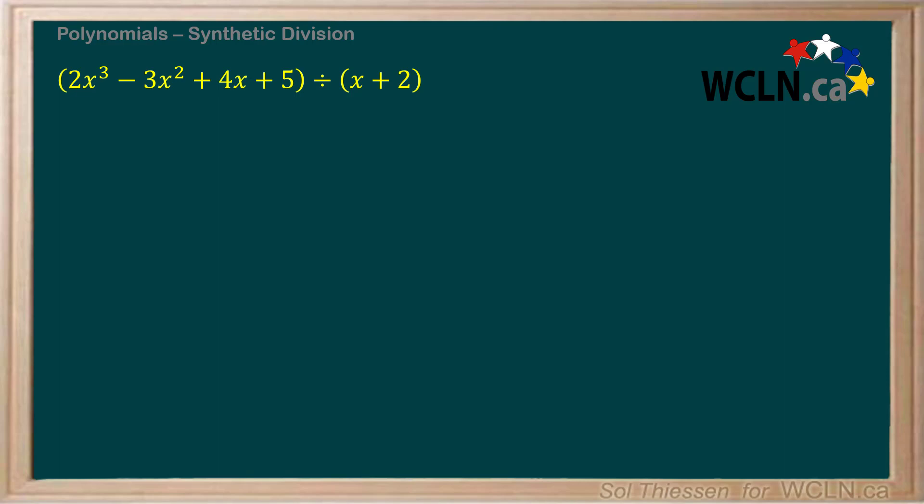Once we've taken the divisor and converted it to the x minus a form, we can draw up the half box symbol that you saw before. Then we can bring down the a value, which is negative 2 in this case, to outside the upper left side of the box.